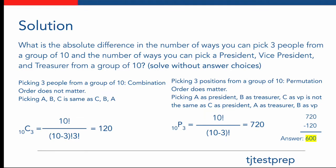Before we tackle this question, we must first understand the difference between combinations and permutations. The first half of this problem is asking us to pick three people from a group of ten, meaning this will be a combination, where order does not matter. For instance, picking person A, B, and C is the same as picking a group containing the same people, C, B, and A, in just a different order.